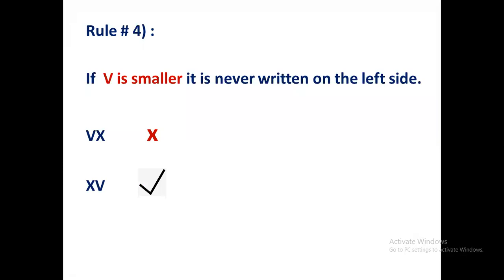Rule number 4. If V is small, there are two numbers, two letters. One stands for 10 and second stands for 5, because X is for 10 and V is for 5. Now you can see that V is the smaller number and V cannot be written on the left-hand side. This is wrong. Whenever V is written, that is written after the bigger number. V is always written after the bigger number. Don't write V before the bigger number. Never. That will be wrong.